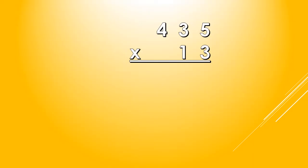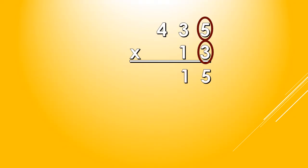Okay, let's try this one. How about 435 times 13? We multiply the 1's digit of the Multiplier to the Multiplicand starting from the right. So, we multiply 3 and 5. 3 times 5, we get 15. Now, remember, if our product is 10 and up, we have to regroup. So, we regroup this 1 to the 10's place value.